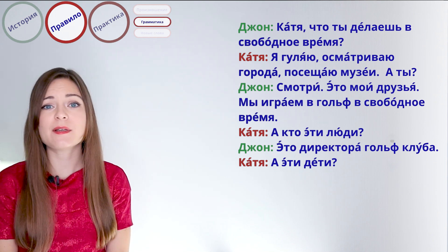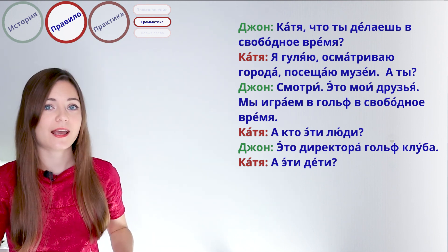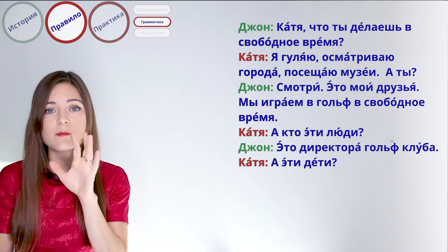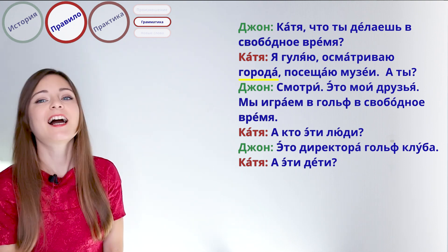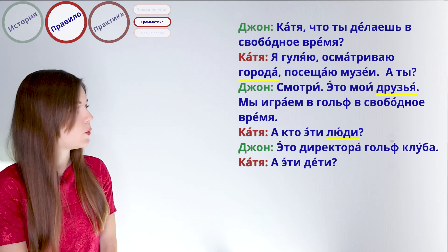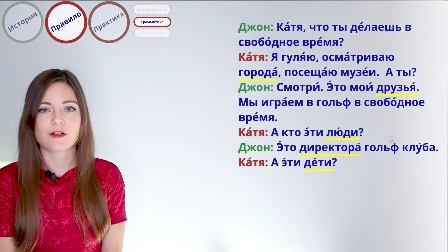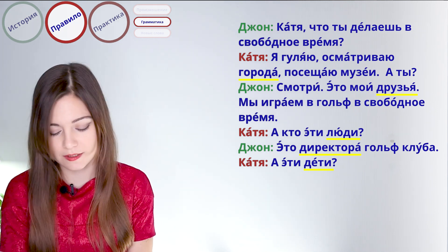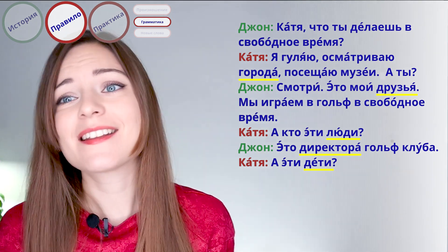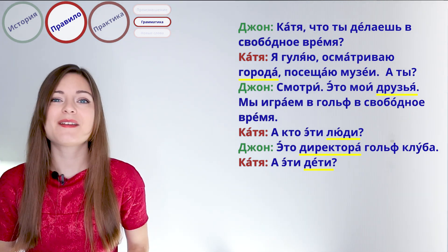Grammar. Грамматика. In our dialogue, we have some irregular plurals. You know that usually plurals are formed with the letters И and Ы, and then А and Я for neutral forms. But here something strange is happening. Can you find some strange plurals? Right — города finishes with А. Друзья, люди — people, директора — directors, дети — children. In Russian, just like in English, we have some irregular plurals. Think of 'mouse' but 'mice', or 'foot' but 'feet'. There are some words you have to remember, and if you read, speak, practice and listen, it's going to be easier.